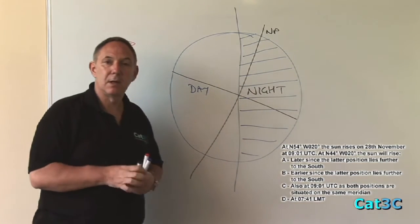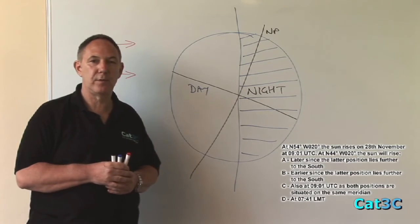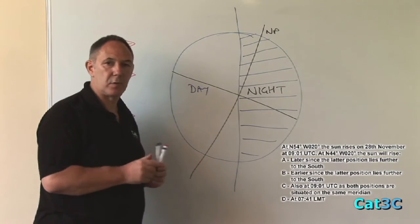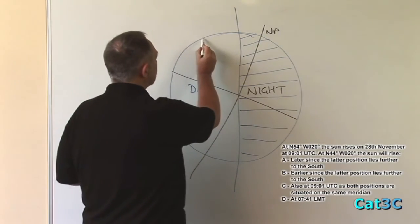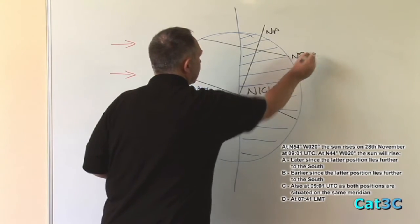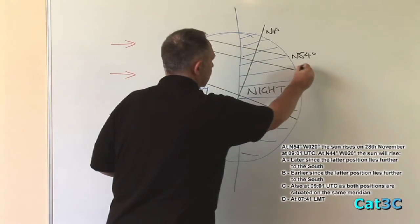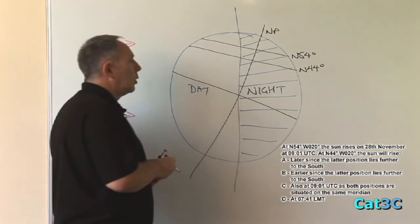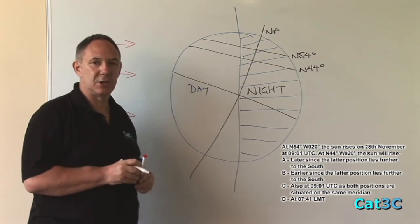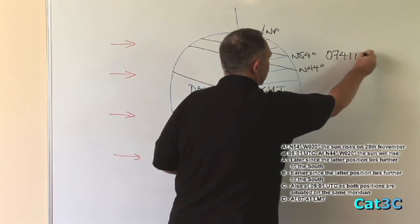What I'm now going to do, I'm going to plot on the two latitudes, north 54 and north 44, approximately. They don't need to be 100% accurate. A rough approximation will do. So, north 54 is about there, and north 44 will be further to the south of it, approximately there.